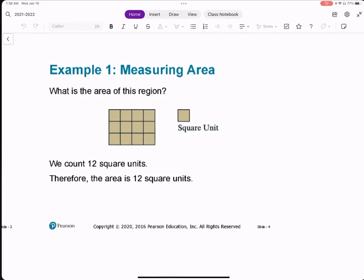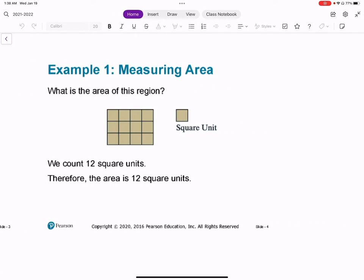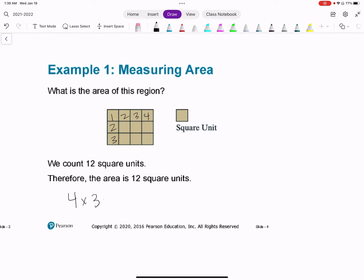It says, what is the area of this region? Each little square is a square unit. So if we count, this is 1, 2, 3, 4... 2, 3. So 4 by 3, which would be 12 squares. Or if you counted all of your squares, then it's 12 square units.